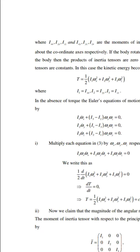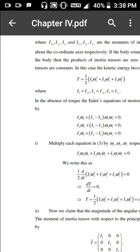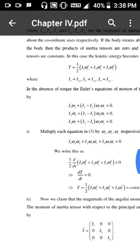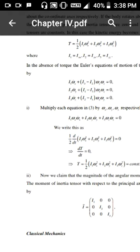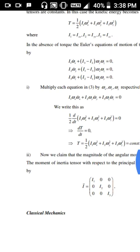From Euler's equations of motion for the principal axes: I₁·ω̇x + (I₃ - I₂)·ωy·ωz = 0, I₂·ω̇y + (I₁ - I₃)·ωx·ωz = 0, and I₃·ω̇z + (I₂ - I₁)·ωx·ωy = 0.